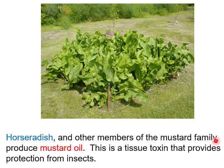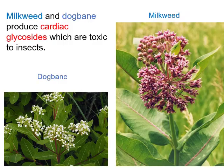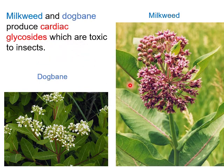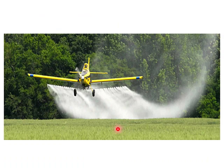Horse radish and other members of the mustard family produce mustard oil, which is a tissue toxin that provides protection from insects. Milkweed and dogbane produce cardiac glycosides, which are toxic to insects. These are all examples of chemical defense mechanisms in plants that have co-evolved as protection against herbivorous insects.